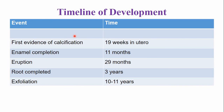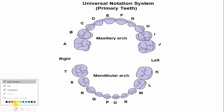The timeline of development: the first evidence of calcification begins around the age of 19 weeks in utero. The crown is completed by the age of 11 months. The tooth emerges into the oral cavity at around the age of 29 months, and root is completed by the age of 3 years. The tooth is lost by exfoliation at the age of 10 to 11 years, and around this age it is replaced by the maxillary second premolar.